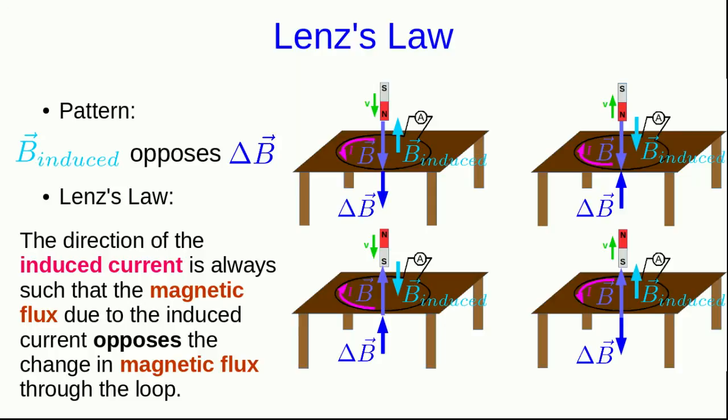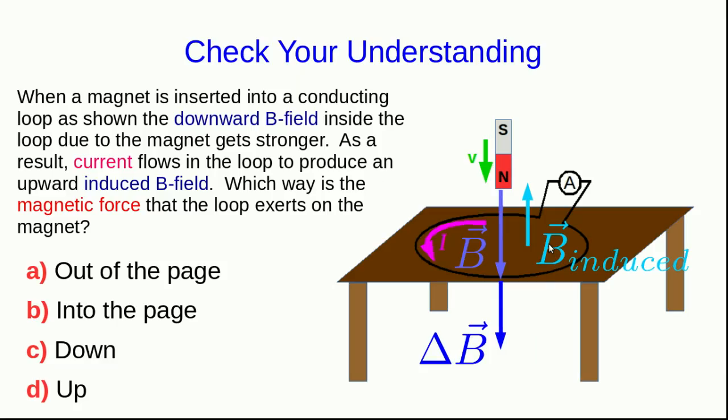Clear? Probably not. This one takes a lot of practice to think through. We'll have plenty of time in class to practice using Lenz's law, and that's probably the better place to do it. In the meantime, here's something related that you can think about. This magnet is being inserted into a conducting loop, producing a downward B-field inside that loop which is getting stronger as the magnet gets closer. And so there's an upward-induced B-field. What is the direction of the force that the loop will exert on the magnet?